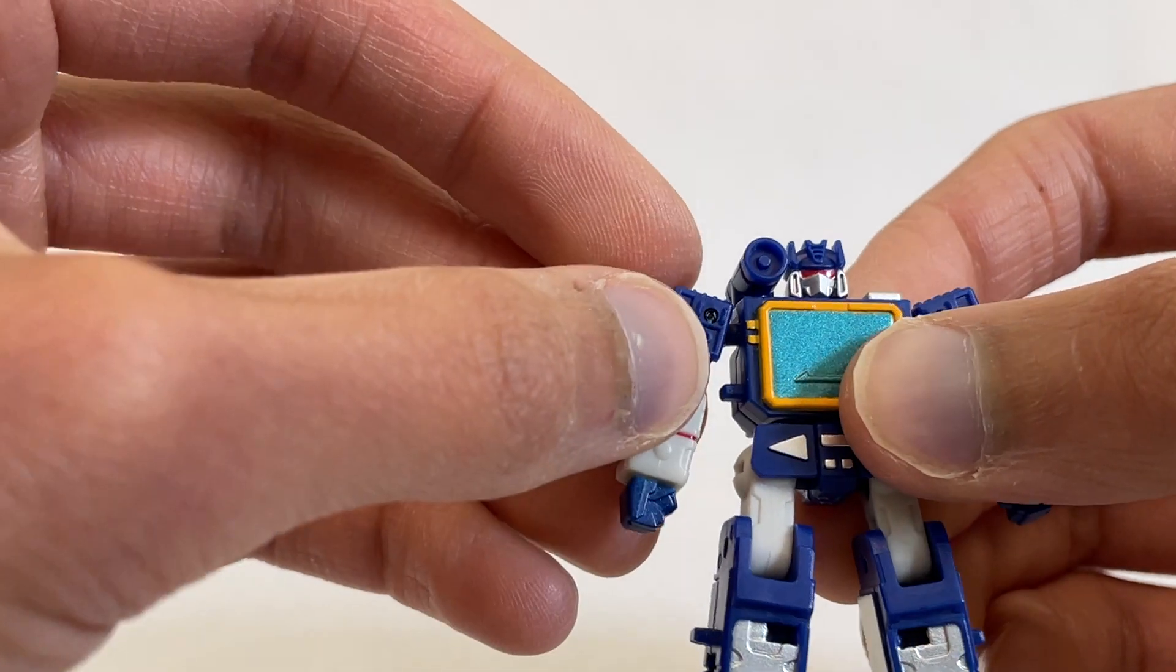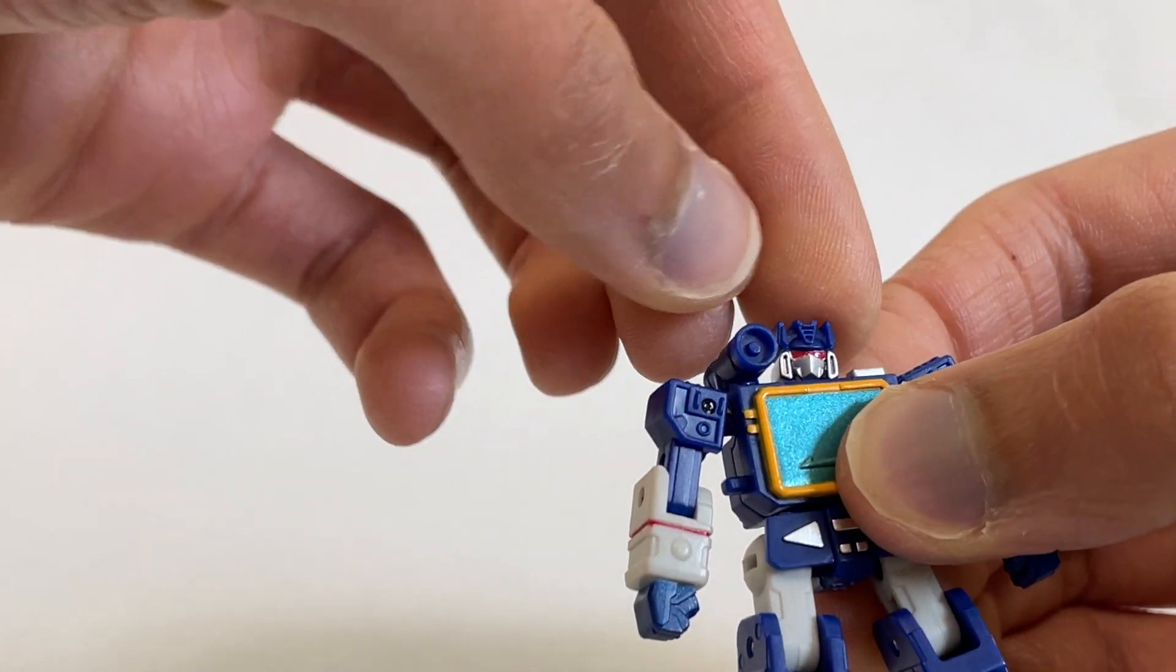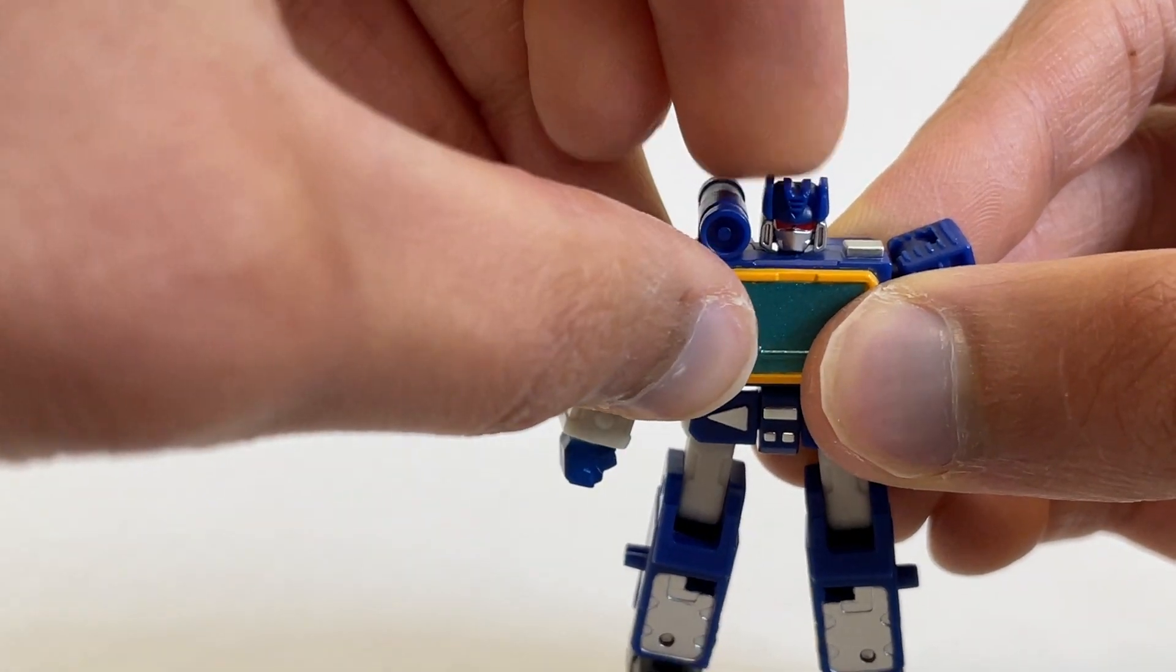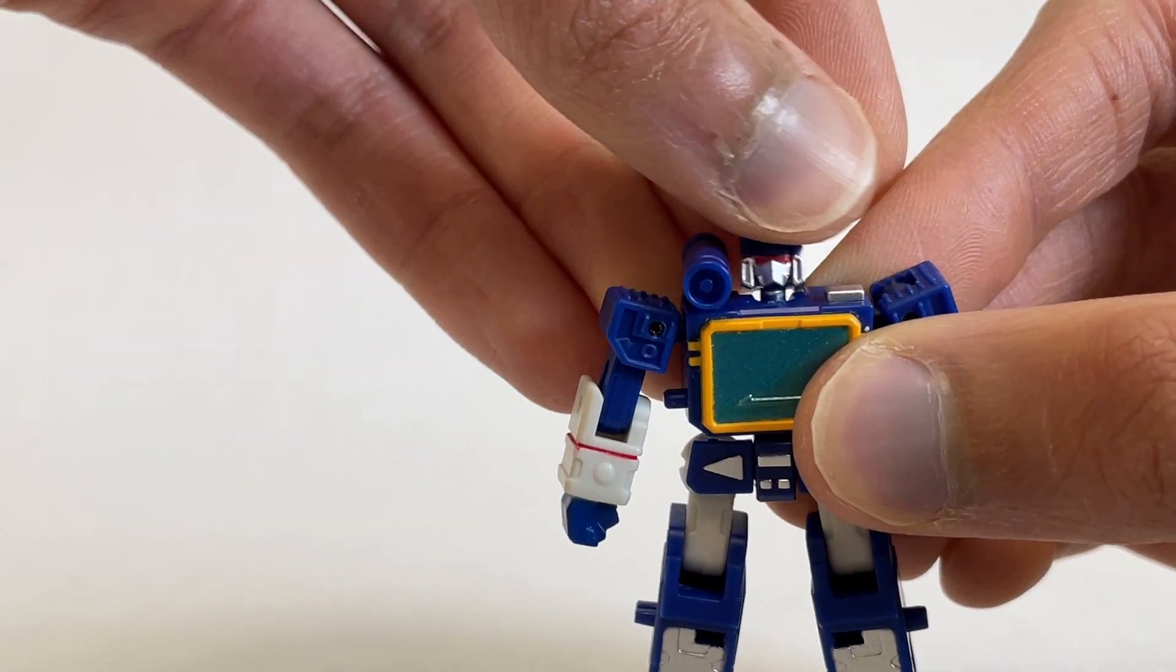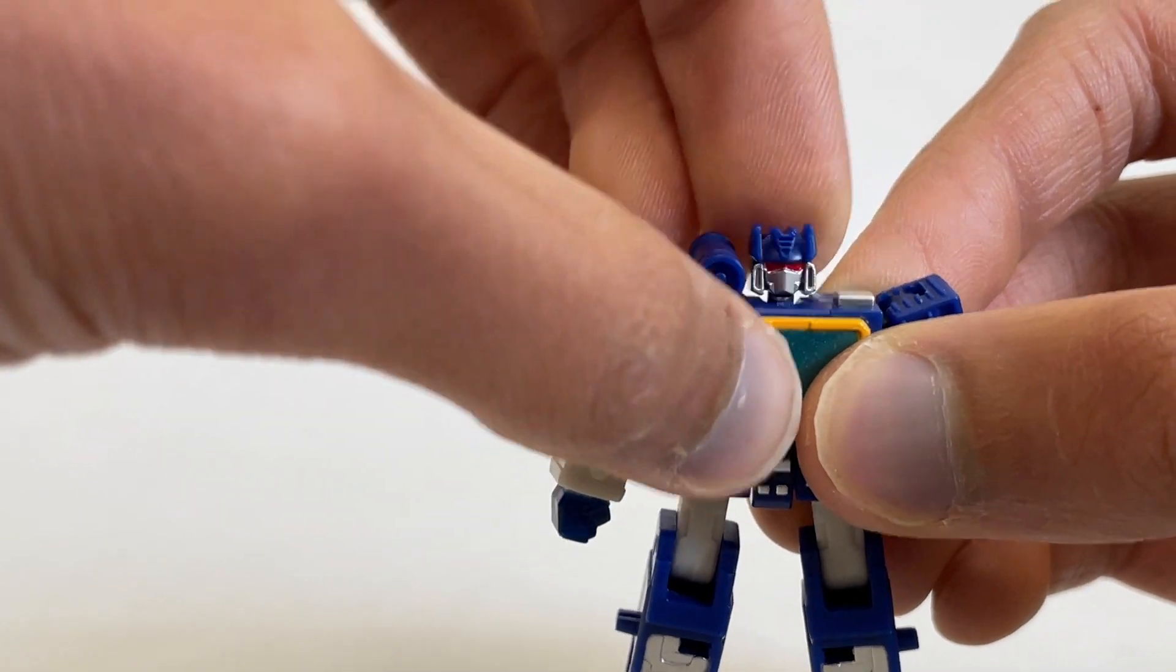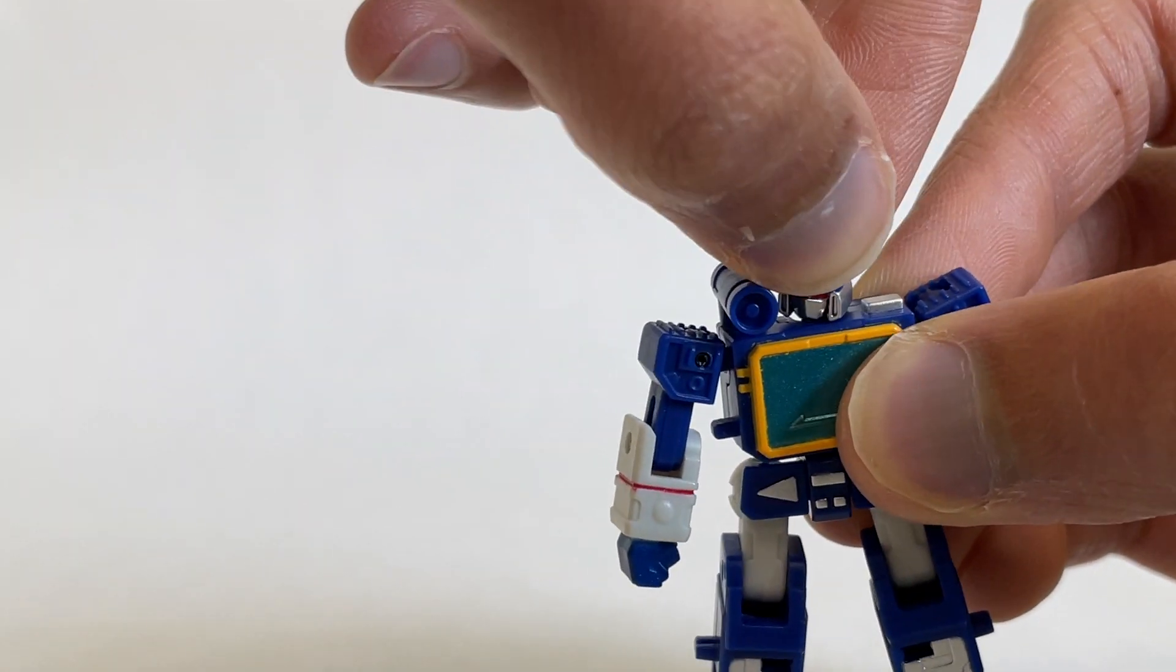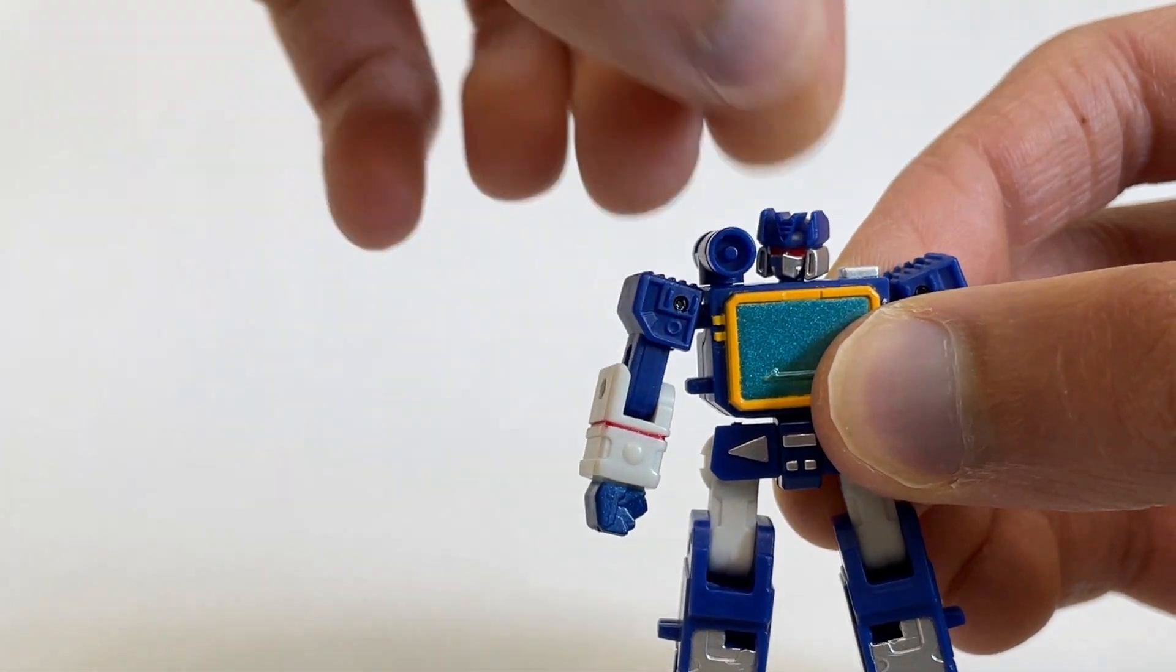In terms of articulation, he has a ball joint at the head, so you can look side to side. You can't quite look down. You can look up to a very great degree because of transformation. And you can, of course, turn each side. Actually, when you turn them, you could almost get him looked down a little bit.